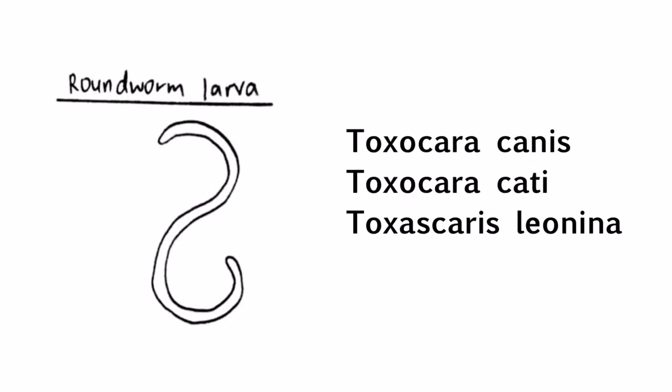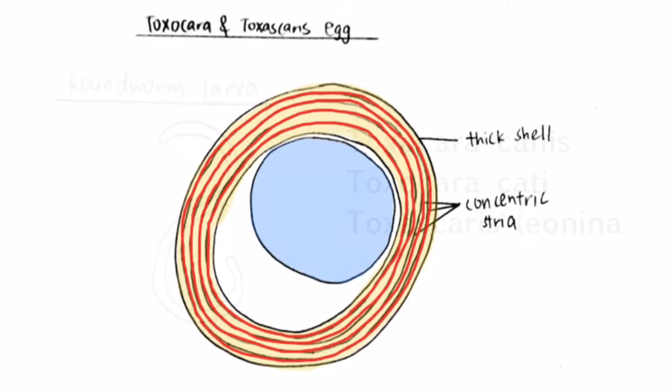And Toxascaris leonina is found in both cats and dogs. We can easily identify these three roundworm eggs because of their spherical shape and thick sidewalls, which contain concentric stria.